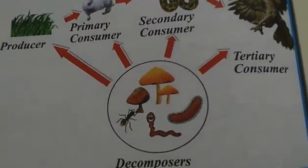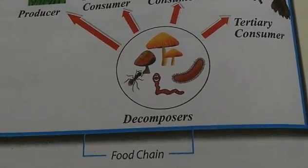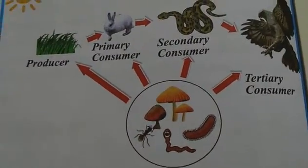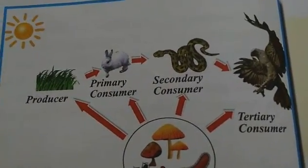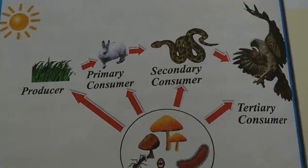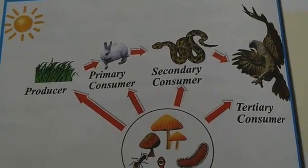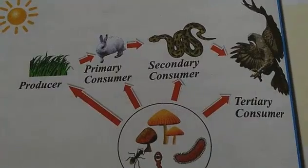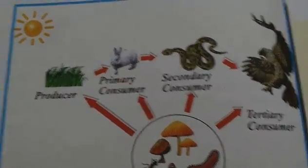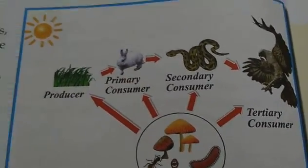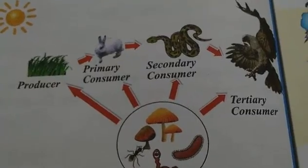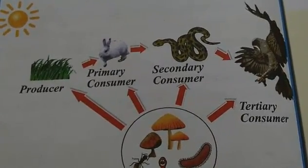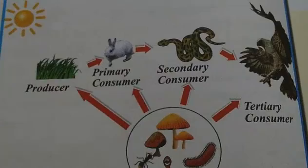The sun is the base of our food chain. Our Earth's life would be lifeless without the sun, so it is most important. The sun is the source of energy on Earth — always remember that.